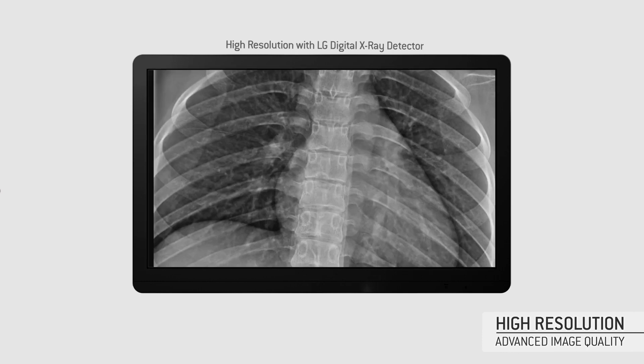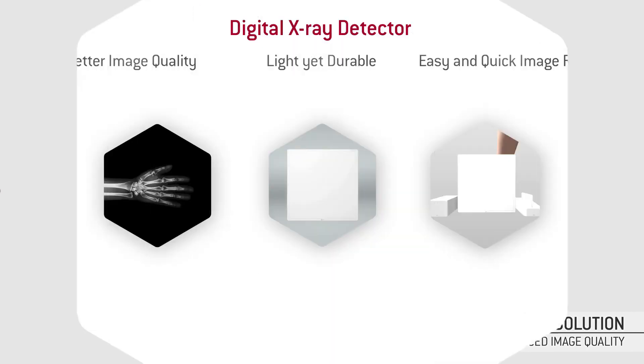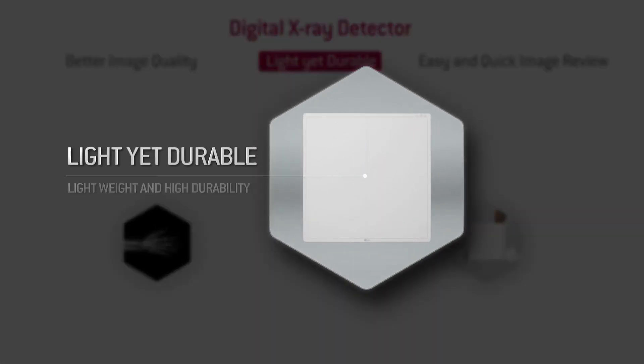Like a TFT LCD display, millions of roughly 0.2 mm pixels, each containing a thin film transistor, form a grid pattern in amorphous silicon on the glass substrate.